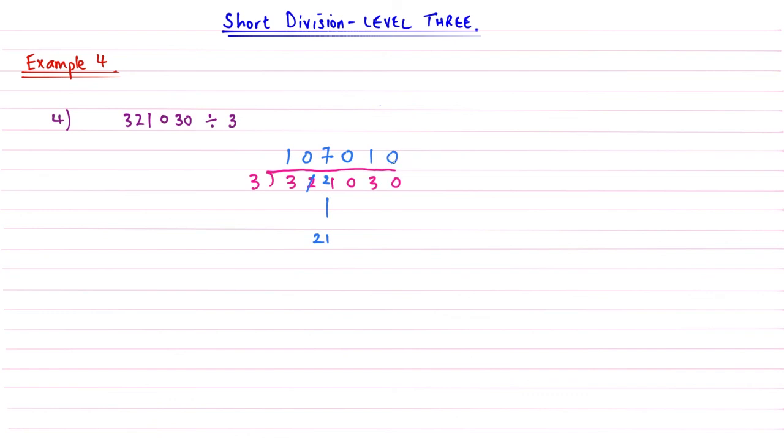And then threes into zero don't go. A really common mistake is that if it doesn't fit on the end we don't put a zero, and so your answer is actually going to be ten times too small if you don't put your zero on the end. So you've got to make sure that you finish the question thoroughly. And so the answer to that one is one hundred and seven thousand and ten. And that's the end of the fourth example.